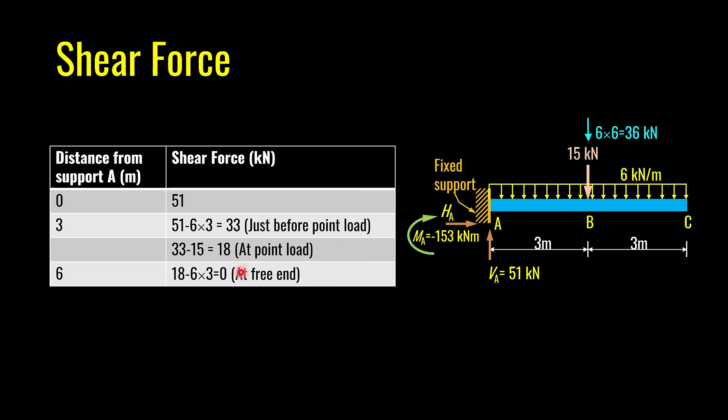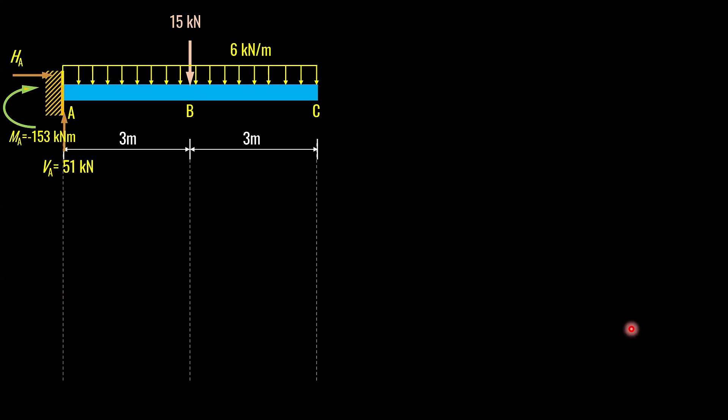At pre-end, you will have 18. Take away whatever load you have between B and C. Between B and C, I will have 6 times 3, which is 18. Finally, you will get a zero shear force. Let us see how we can plot this on a diagram.